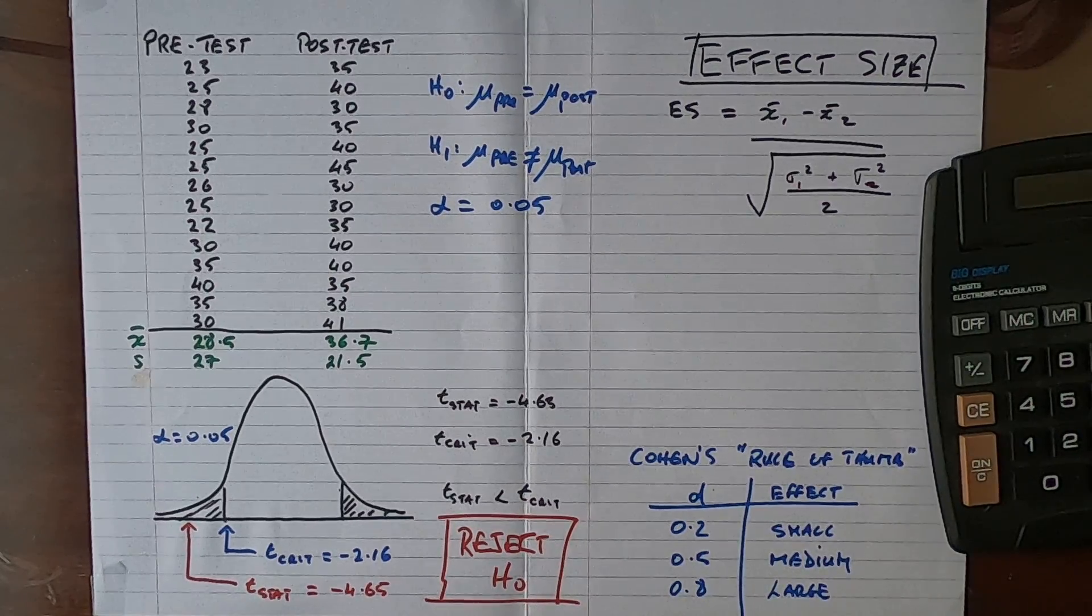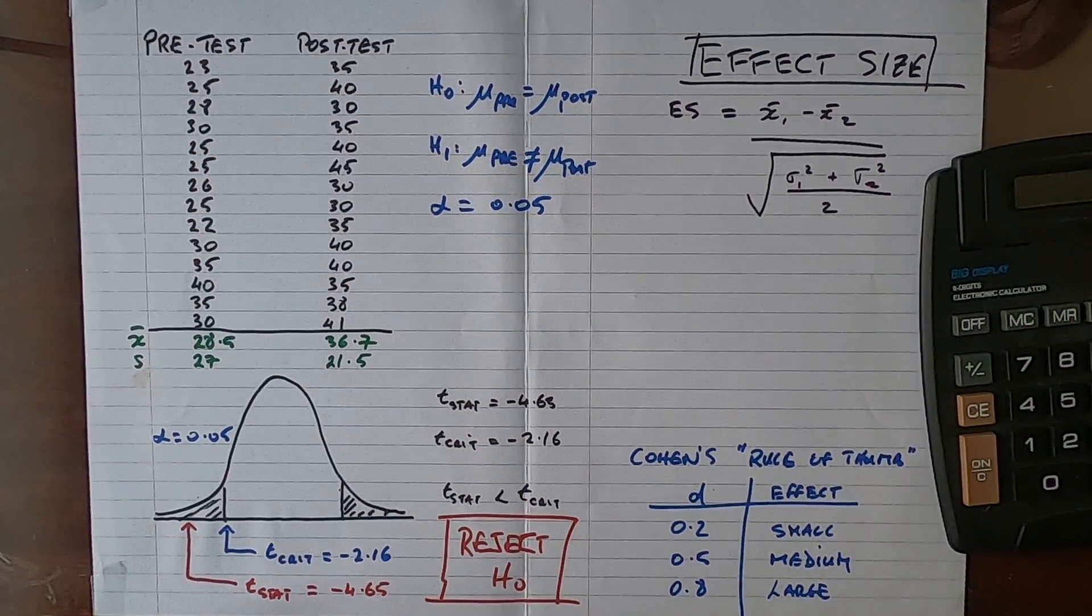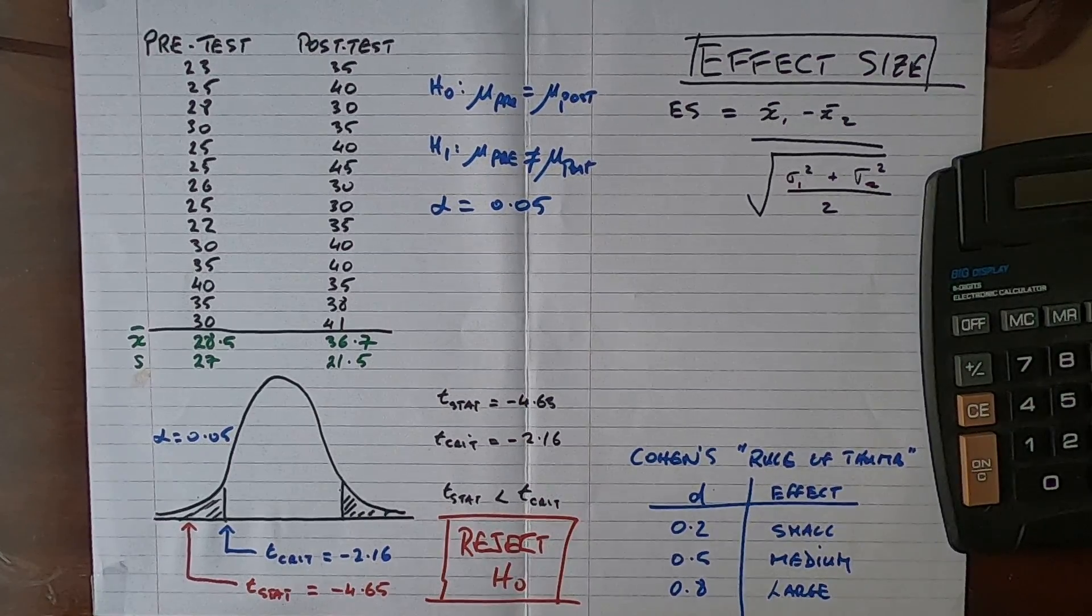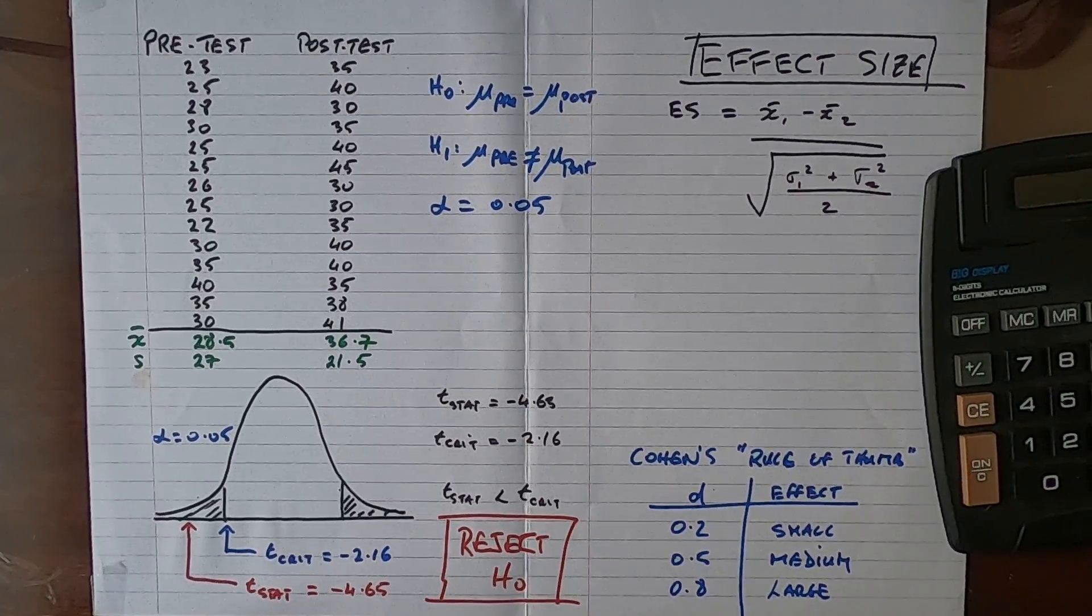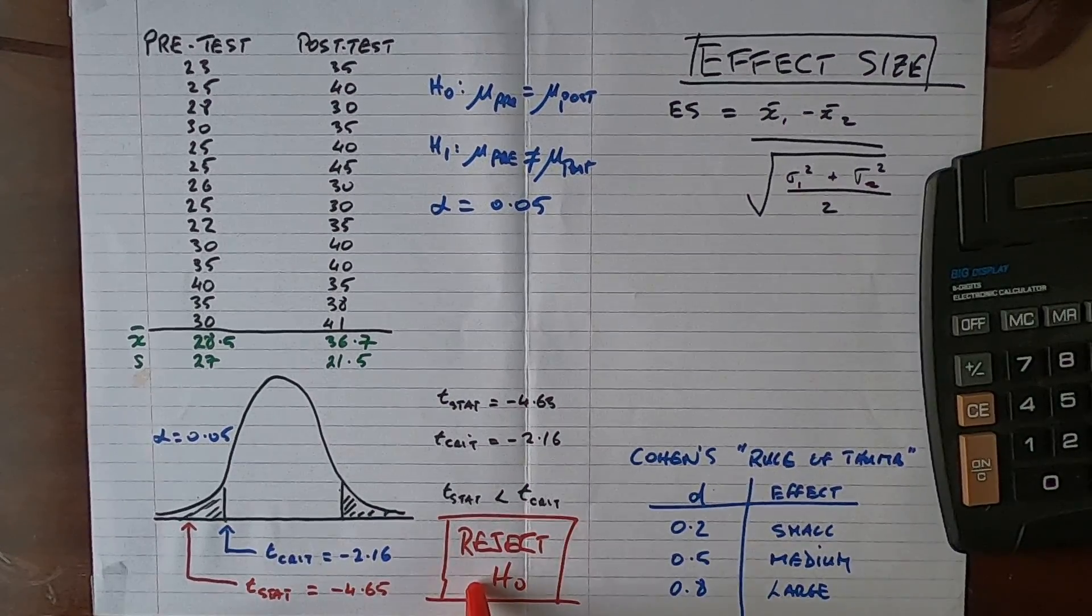Our decision was to reject the null hypothesis. We have found an effect, so we can conclude that the training intervention or the class in this case has had an effect on the student's mean test score. What we don't know is what the size of this effect is. All this tells us is that we have found a significant difference.